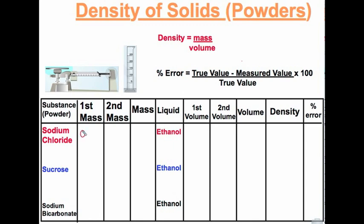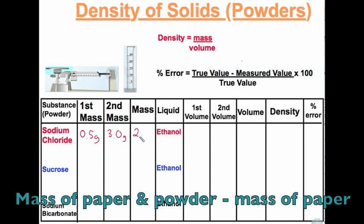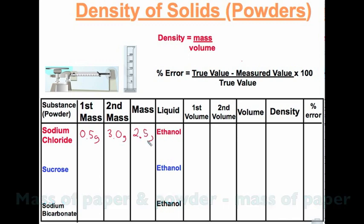The first mass, which was the mass of the wax paper, was 0.5 grams. Combined, the wax paper and the sodium chloride had a mass of 3.0 grams. We subtract the mass of the wax paper, and the mass of the powder is 2.5 grams.